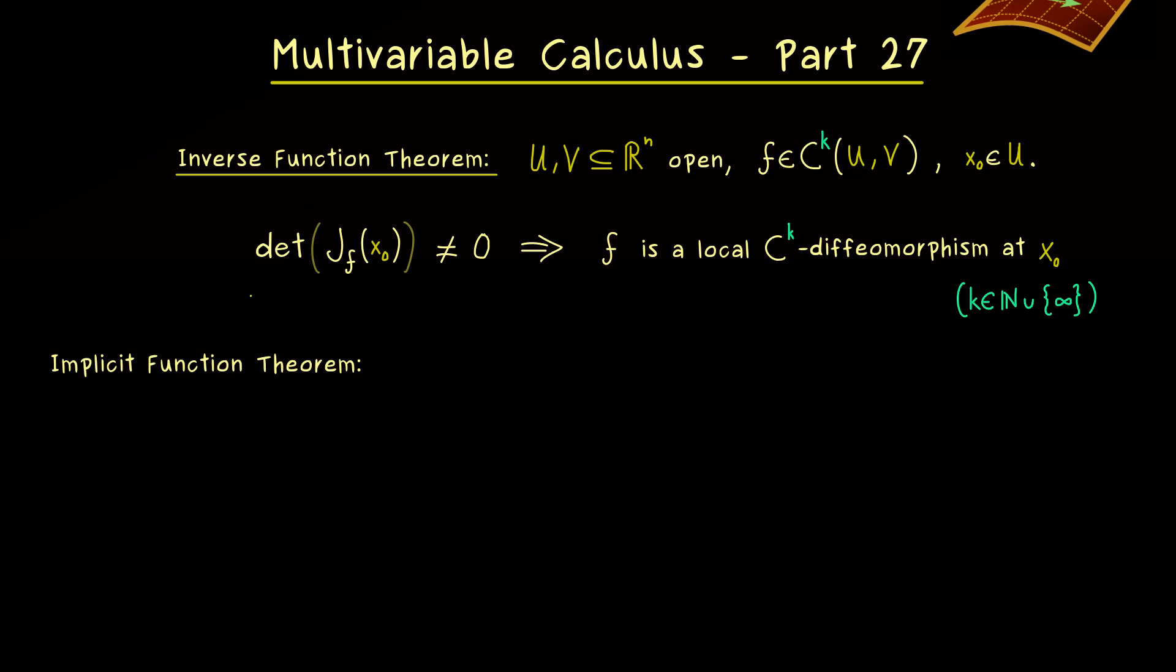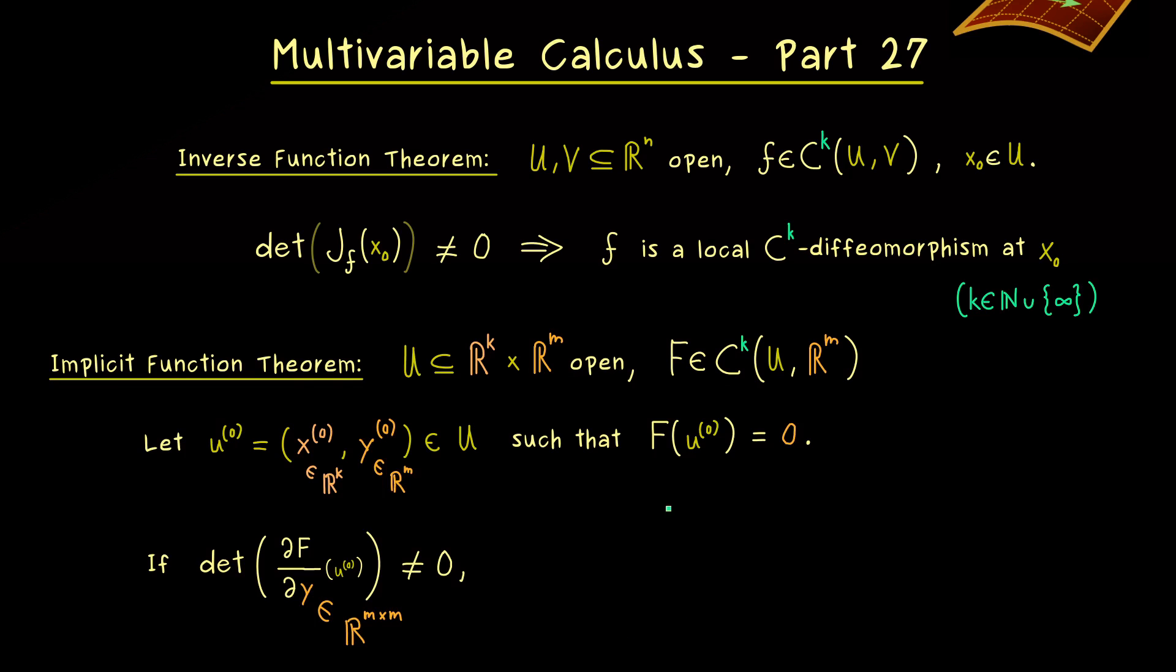Hence we can easily use this generalized version in the implicit function theorem as well. So in the formulation of the theorem here we have our function capital F and it can also be a Cᵏ function now. Otherwise, we have exactly the same assumptions as in the last video. So we have a point u₀ where the function is exactly zero and where the partial determinant is invertible.